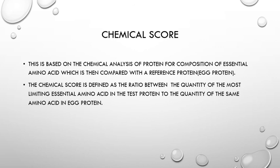Chemical score is based on the chemical analysis of protein for composition of essential amino acids, which is then compared with a reference protein — i.e., egg protein. Chemical score is defined as the ratio between the quantity of the most limiting essential amino acid in the test protein to the quantity of the same amino acid in the egg protein.